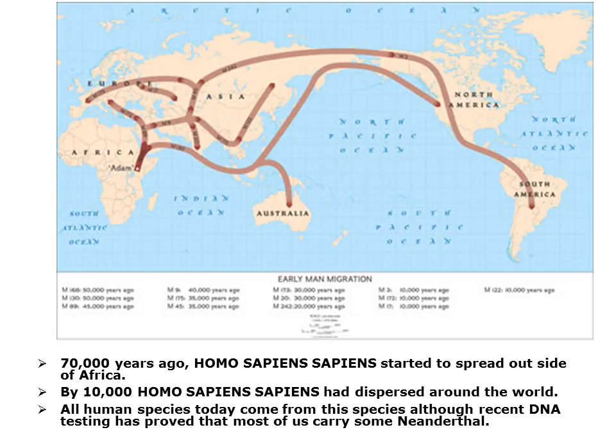70,000 years ago, Homo sapiens sapiens started to spread outside of Africa. Look over here where we circle Adam — this is the area that was most populated because we have the most bones here. You had groups going in various directions. The first group went up to Europe, and then from Europe they went across the Russian area. Russia today is the largest land mass of any country.